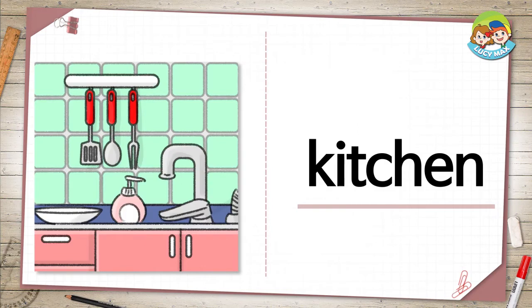The first word is kitchen. This is the place in the house where you cook. There are more things in the kitchen. What are they?